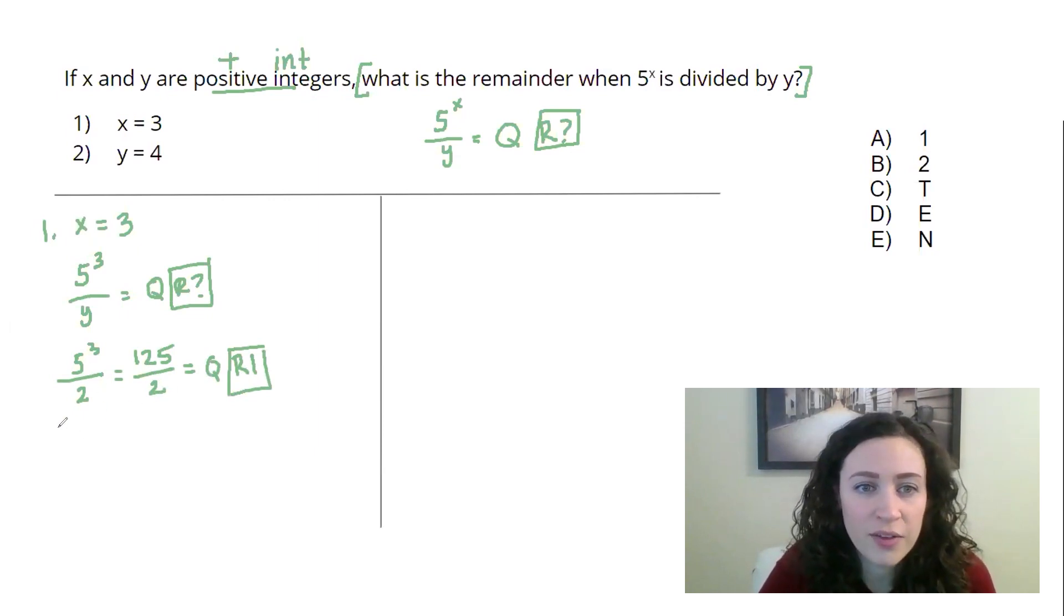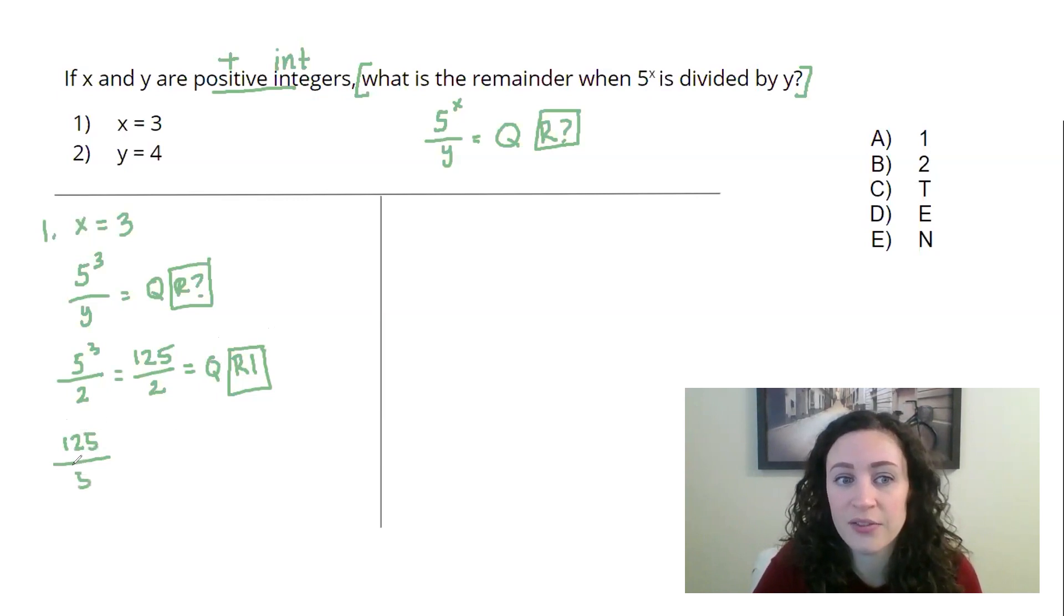Another value I am going to test. For the next one I really want to be thinking about how to break this trend. I want to prove statement 1 insufficient. That's so much easier to do than proving a statement sufficient. So I'm trying to think about a value that might give me a different remainder than a remainder of 1, and I already have a case that is coming to mind because 125 is definitely divisible by 5 neatly. So we have whatever our quotient is, and we're going to have a remainder of 0 in this case. We have two different remainders. We have a remainder of 1, remainder of 0, which means we cannot successfully answer the question posed to us. Statement 1 is not sufficient.